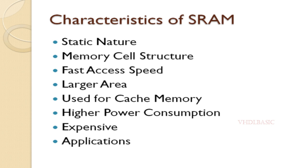Use as cache memory: SRAM is commonly used as cache memory in CPUs because it can provide quick access to frequently used data, reducing the time that the CPU has to wait for data to be fetched from slower main memory like DRAM. Higher power consumption: due to its larger size and more complex circuitry, SRAM typically consumes more power than DRAM.